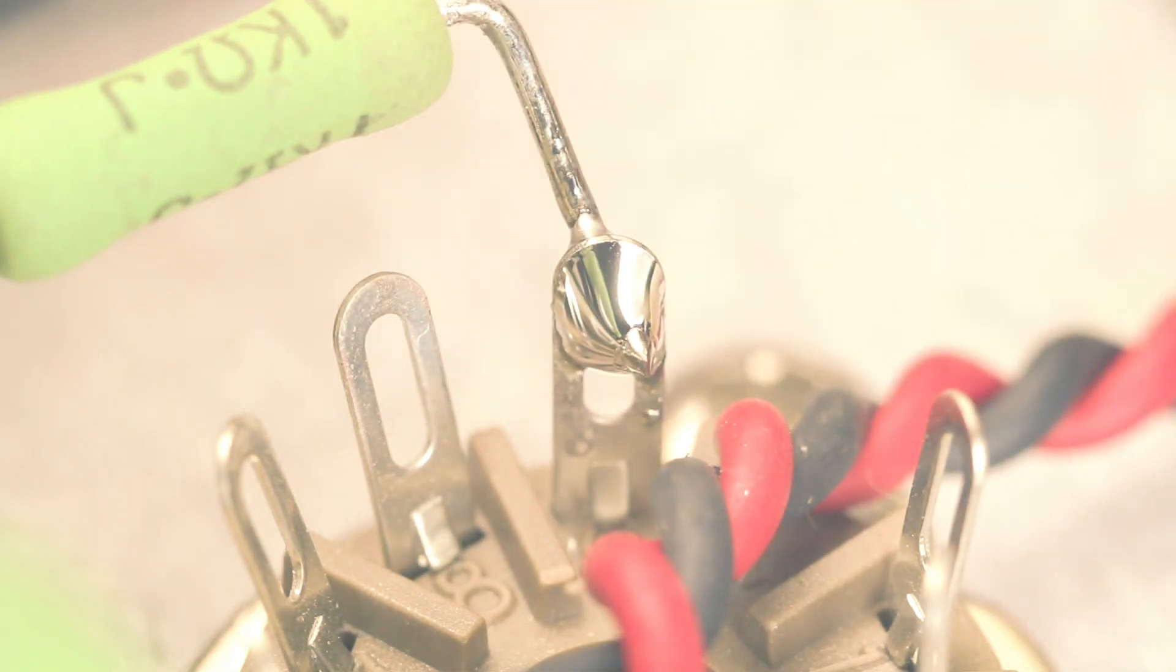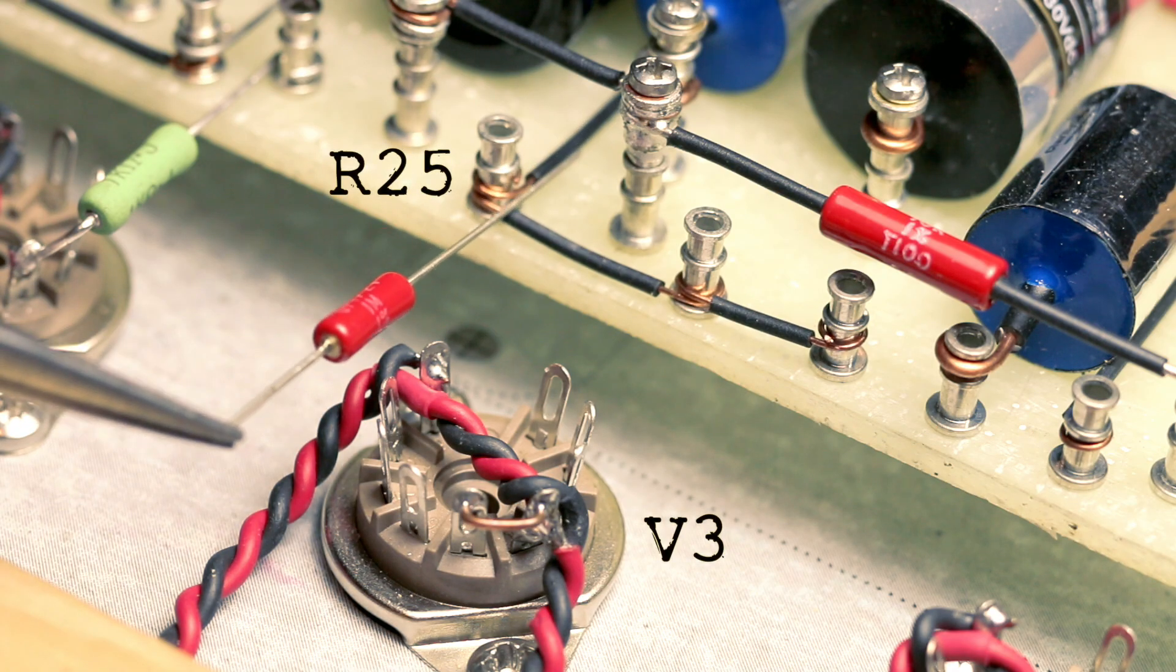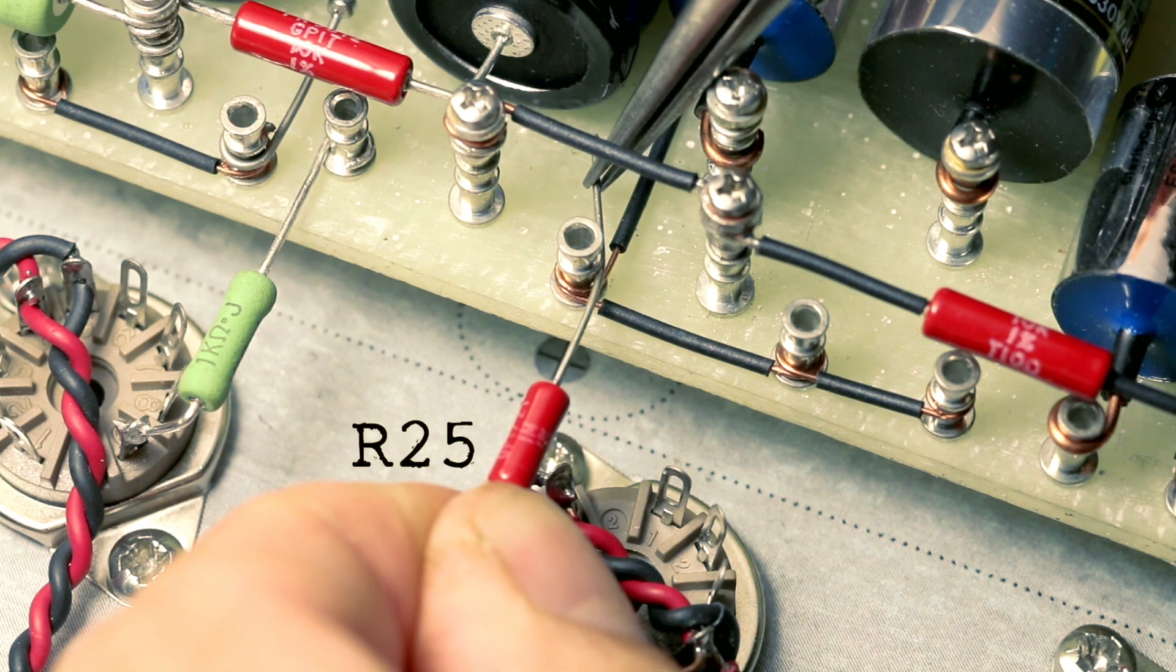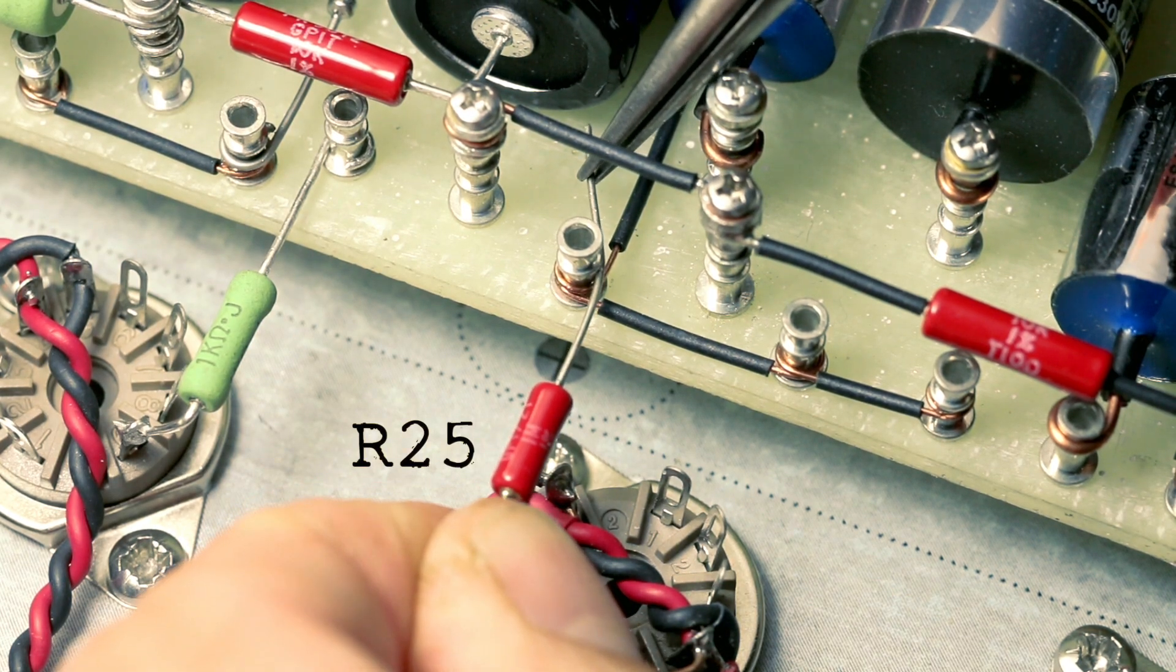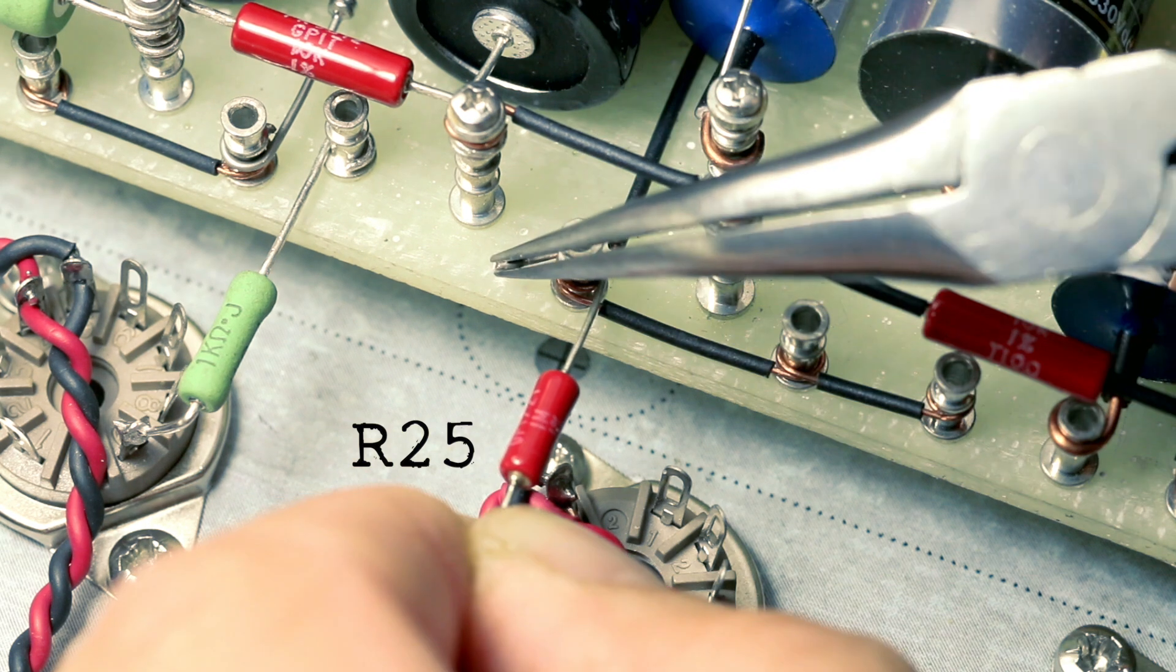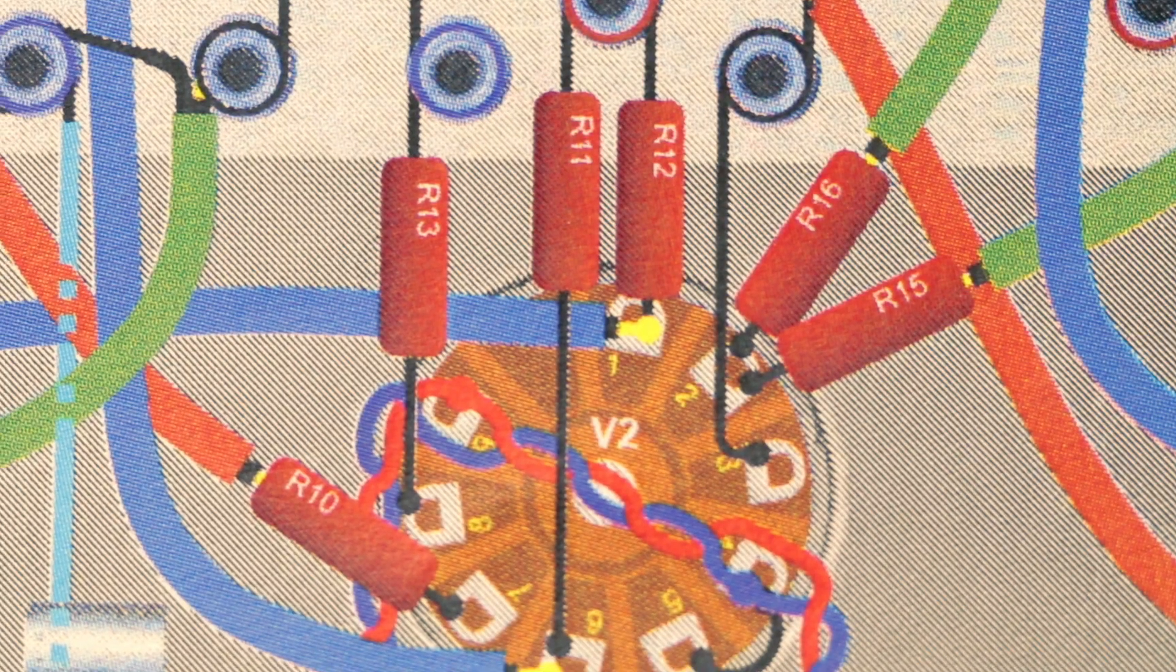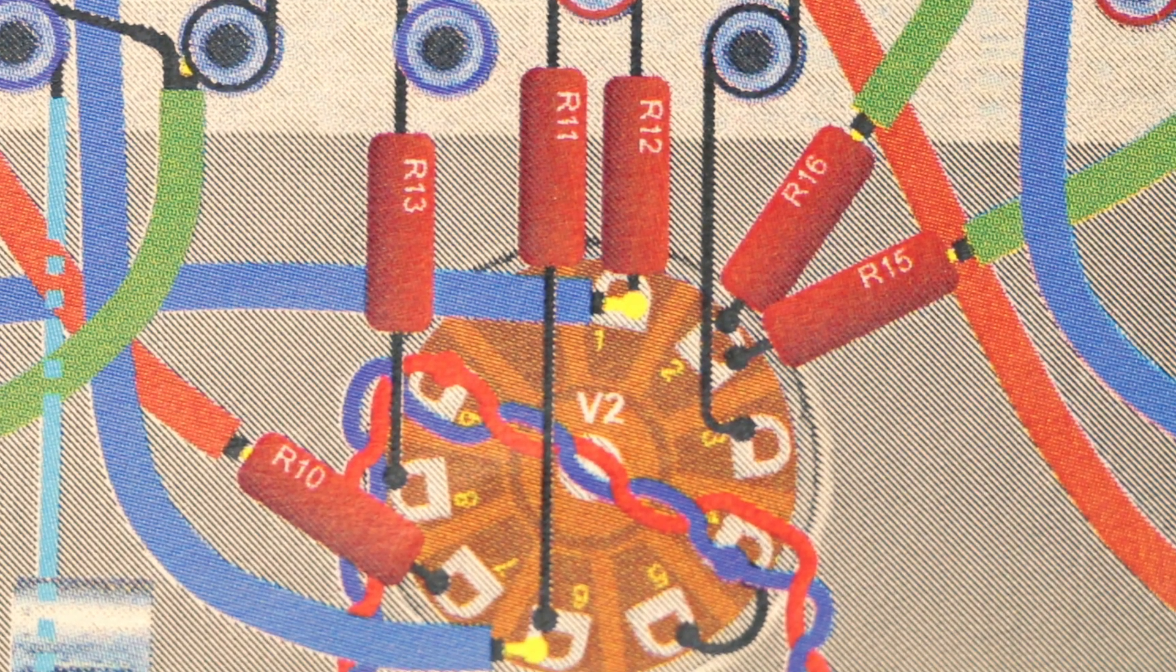Notice at this stage that we are only putting into place plate and cathode resistors. All grid resistors will be attended to at a later stage and they will assume some kind of angle to reduce any unwanted coupling with the plate resistor.